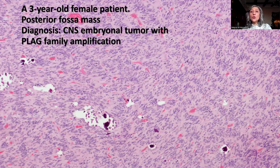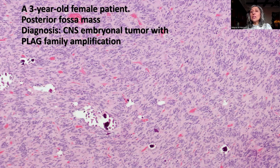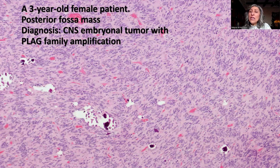This is a newly described tumor entity in the central nervous system that can only be diagnosed using advanced molecular diagnostics, including methylation profiling. PLAGL family amplification tumors are divided into PLAGL1 and PLAGL2 subtypes. PLAGL2 family tumors usually occur in the posterior fossa in infants, similar to our patient. The appearance is usually similar to ependymoma, though some tumors have an embryonal tumor-like appearance consistent with the nuclear morphology and fibrillary neuropil seen in this case.